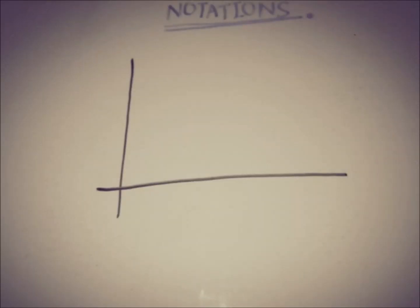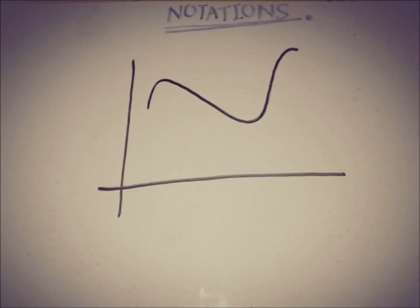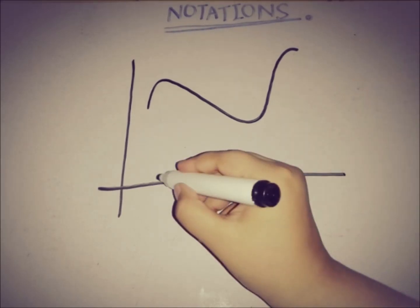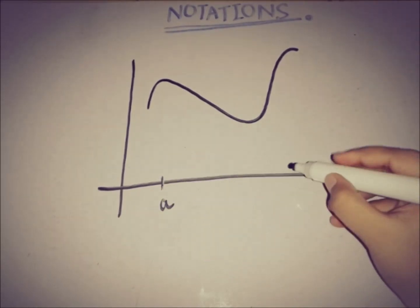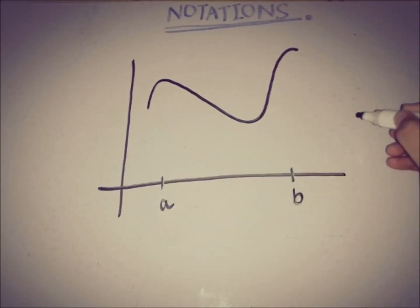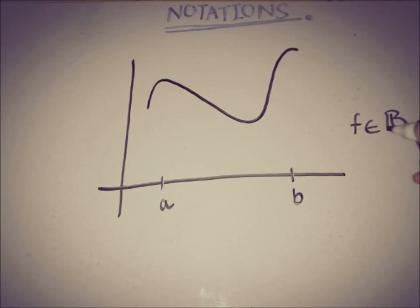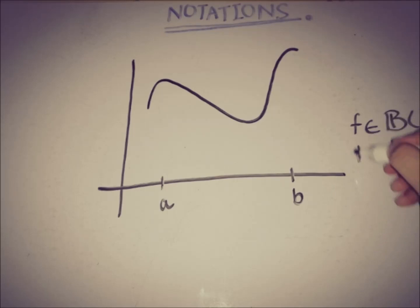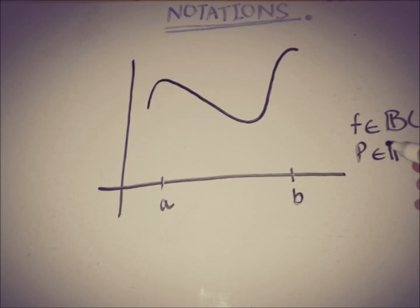We will need a bounded function f taken from the set B of all bounded functions. We also need a closed partition of [a, b], so we have P that belongs to the set of all partitions of a and b.